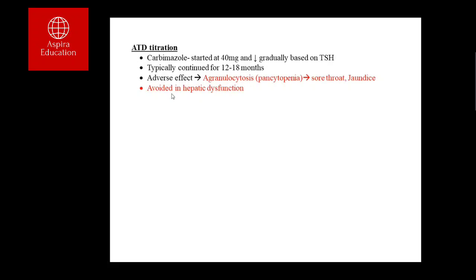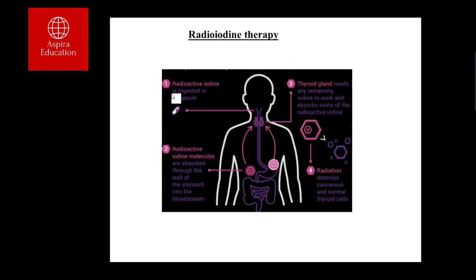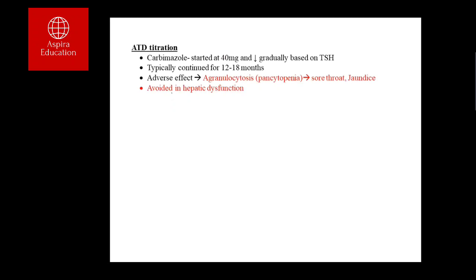The preferred anti-thyroid drug is carbimazole, which inhibits the thyroid peroxidase enzyme and reduces T3 and T4 synthesis. It takes three to six weeks to take effect and treatment continues for 12 to 18 months. The main adverse effect is agranulocytosis — a decrease in granulocyte production causing pancytopenia — which can present with infections such as sore throat or pharyngitis. Carbimazole is contraindicated in hepatic dysfunction, as it is metabolised by the liver; the alternative is propylthiouracil (PTU).